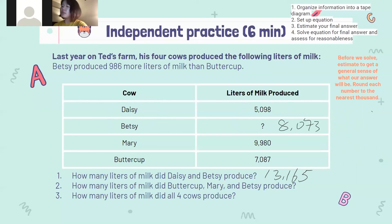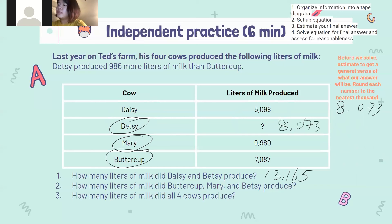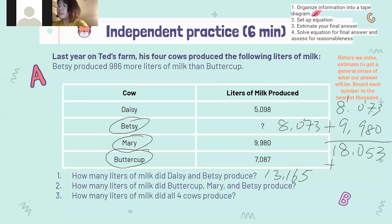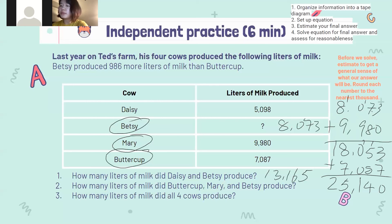How many liters of milk did Buttercup, Mary, and this seed produce? So we need BISC (this seed) and Mary together with Buttercup. 8,073 plus 9,980: 3 plus 0 is 3; 7 plus 8 is 15, carry 1; 1 plus 9 is 10, carry 1; 1 plus 9 is 10, plus 8 is 18. Then add one more: Buttercup 7,087. 3 plus 7 is 10, carry 1; 1 plus 5 is 6; 6 plus 8 is 14, carry 1; 1 plus 7 is 8 — wait, 1 plus 7 is 15, carry 1; 1 plus 1 is 2. So the total amount of milk the three cows produce is 25,140.